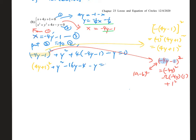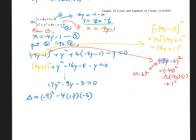After simplifying, we arrive at 17y² − 9y − 3 = 0. We can now check delta: b² − 4ac gives 221.85, which is positive. So there are two points of intersection.